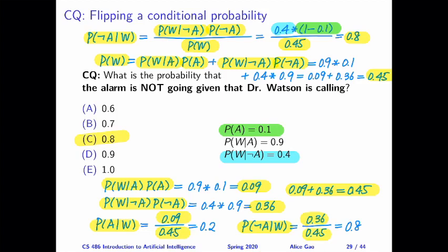You can see the effect of this is that previously these two values, 0.09 and 0.36, they do not sum to 1. But after this normalization, we get 0.2 and 0.8, and they sum to 1. And then 0.8 is our answer to this question.